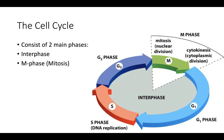Two main phases of the cell cycle are interphase and M phase. Generally speaking, two things are happening: the cell is preparing for division, and then the cell actually divides. Interphase is that preparation period. There are three stages of interphase: G1, S phase (synthesis), and G2. These three stages collectively make up interphase.